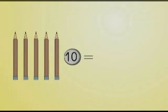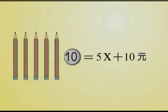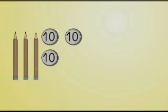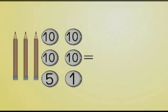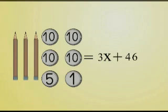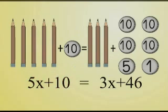小芬买五支剩下十元，所以小芬的钱有5X加10元。小芬买三支则剩下四十六元，所以小芬的钱也可以是3X加46元。没错！5X加10和3X加46都代表小芬所带的钱数，所以5X加10等于3X加46。